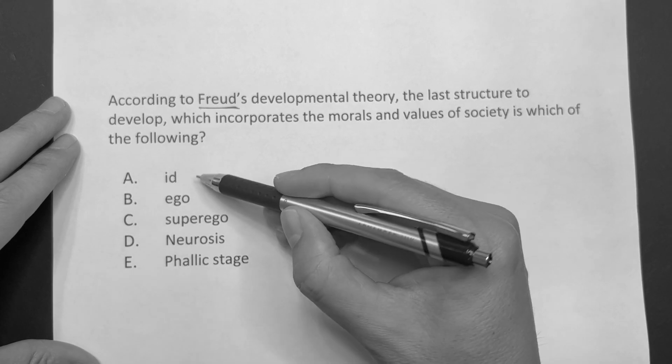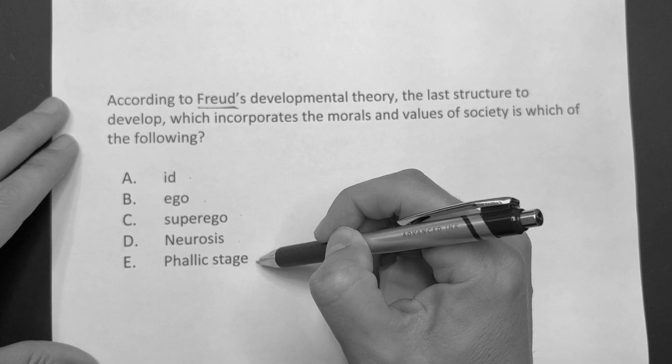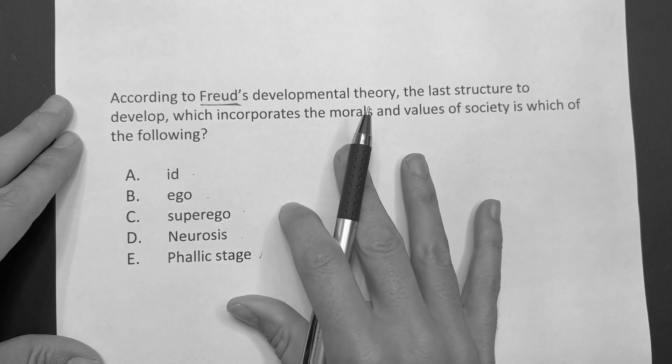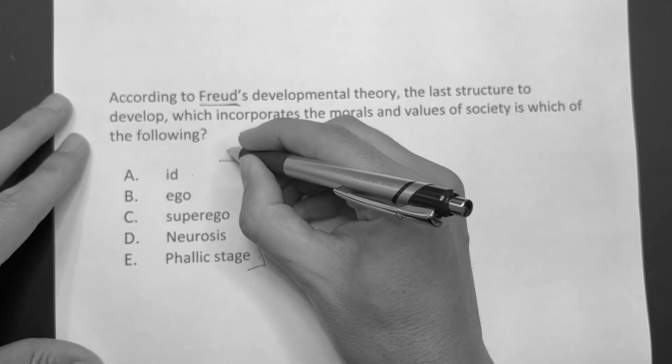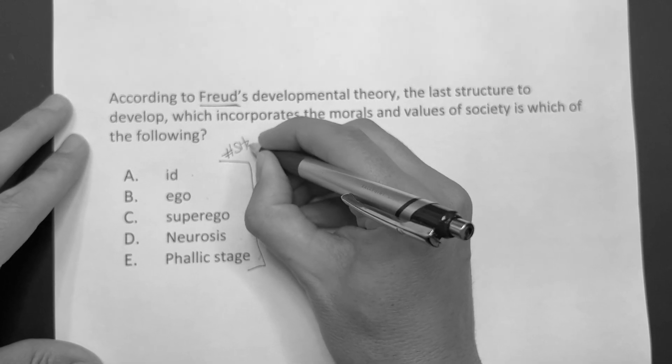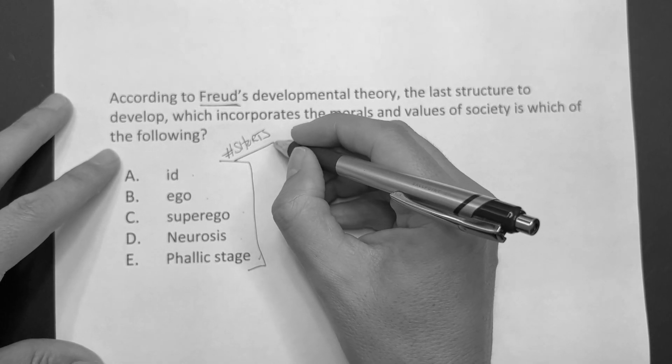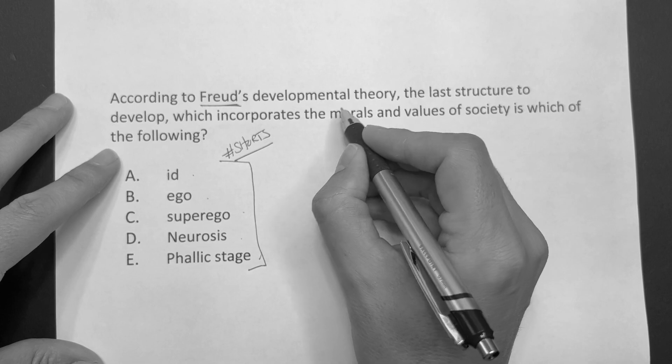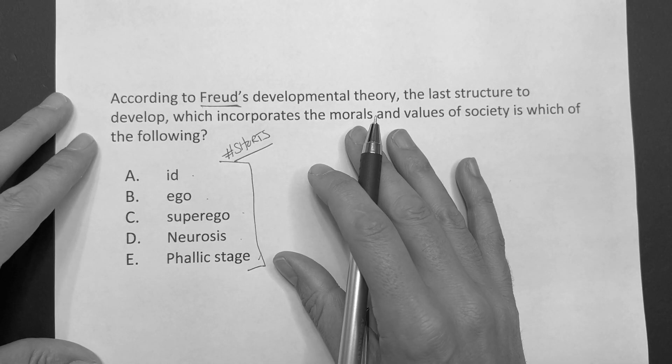And really those terms are gonna be the id, ego, superego, neuroses, and the phallic stage. So before we answer this specific question, and what I'll do, just so you know, is all these answer choices will be reinforced by the short videos. So make sure that you go and get the developmental theory short playlist and then just reinforce these over and over so you don't have to keep relearning it.